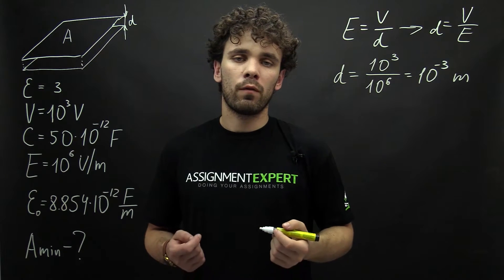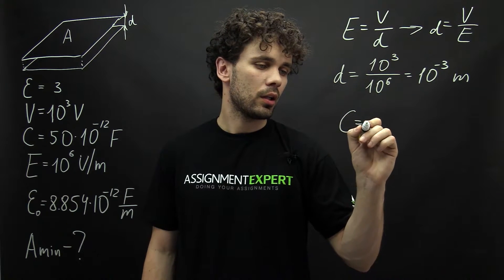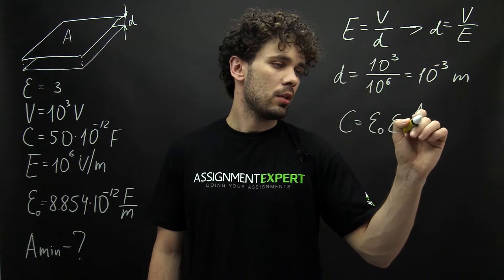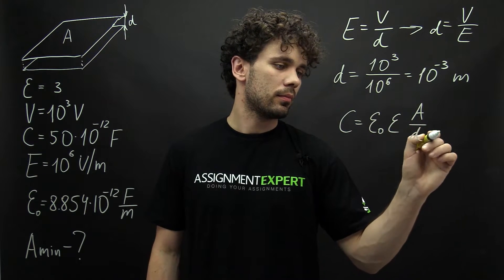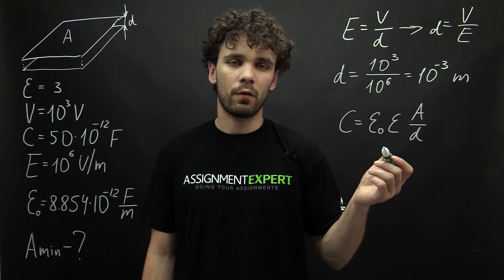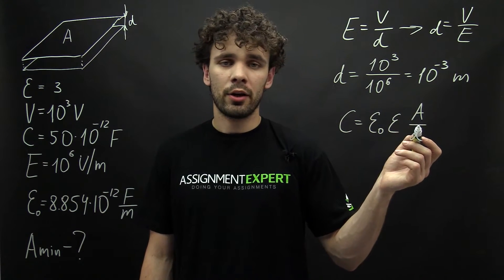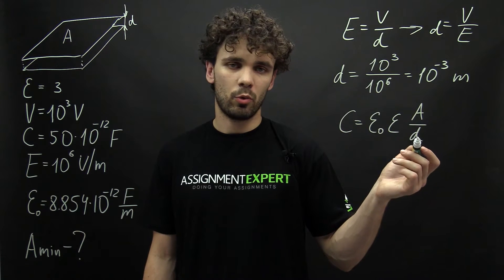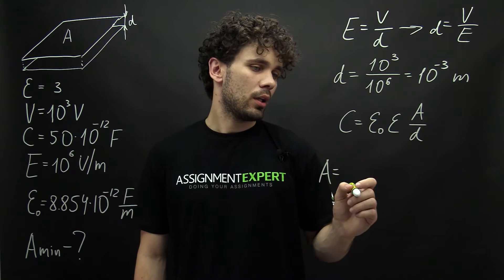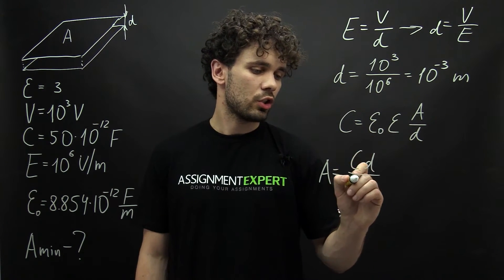Okay, now let's recall the formula for capacitance of the parallel plate capacitor: C equals epsilon-zero times epsilon times A over D. Here C is the capacitance, epsilon-zero is the permittivity of free space, epsilon is the dielectric constant of the material, A is the area of the plates, and D is the distance between them. From here, A equals C times D over epsilon-zero times epsilon.